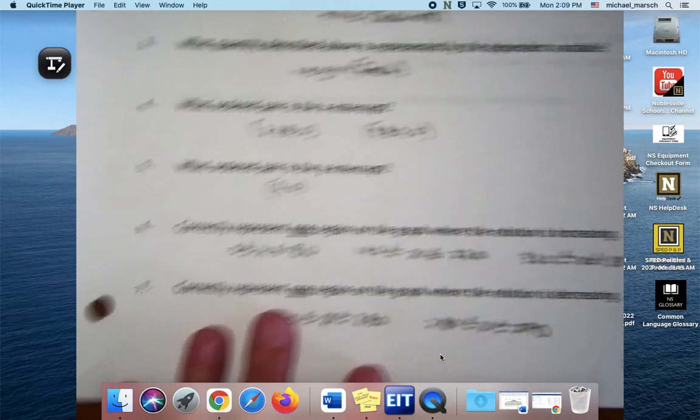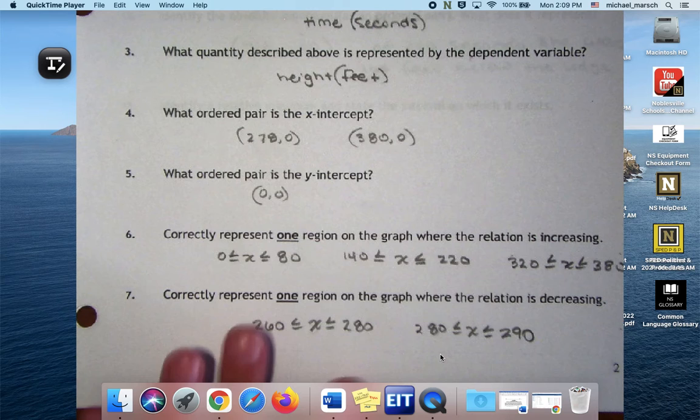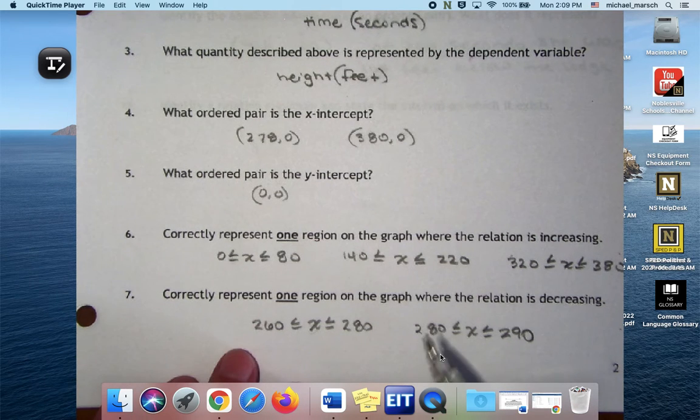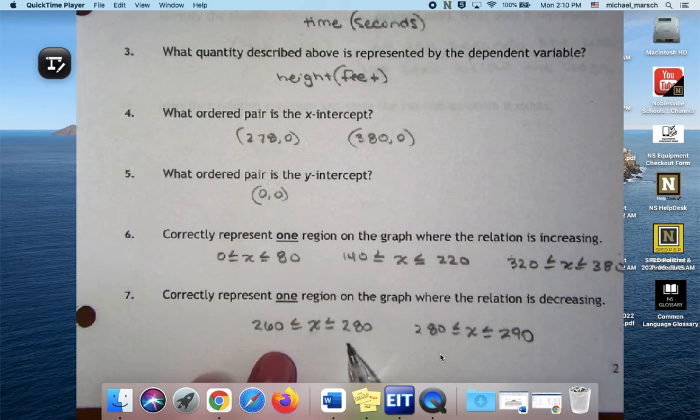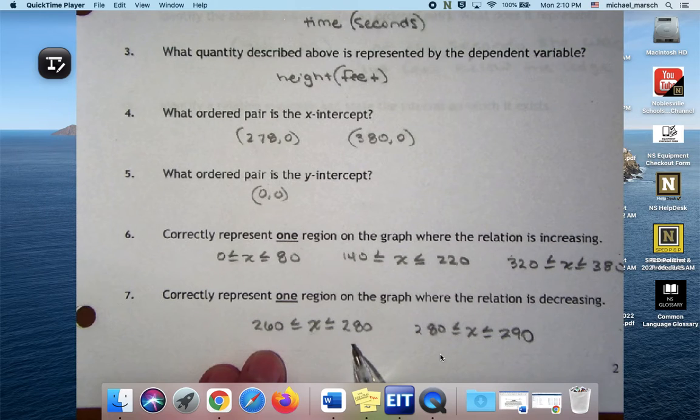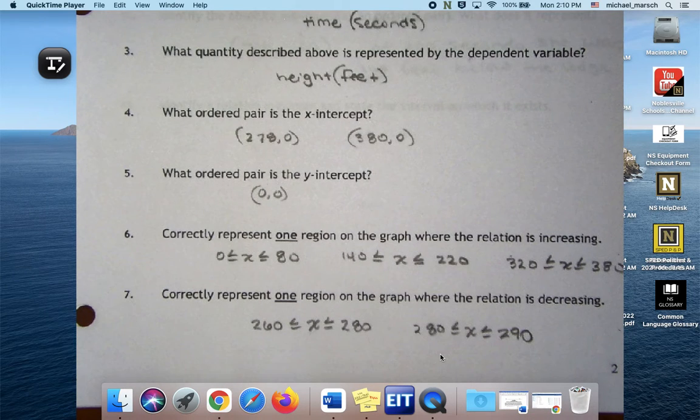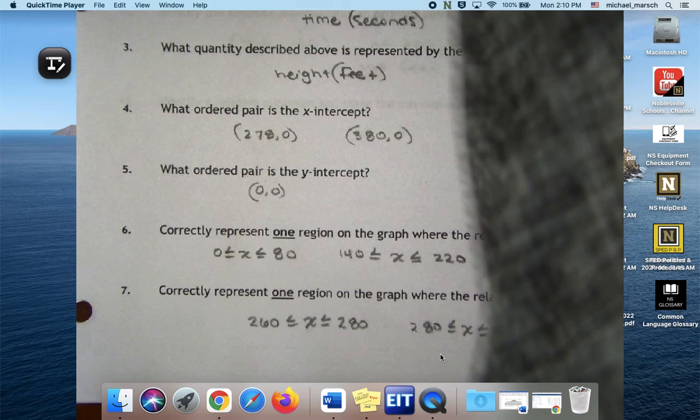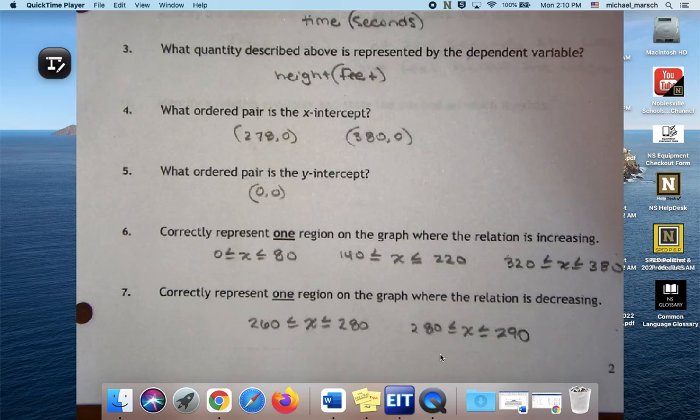Correctly represent one region where the relation is decreasing. So between seconds 260 and 280 it's quickly decreasing, or between 280 and 290 when she had to go back down to that third ski lift. I don't know how realistic this scenario is but we'll just pretend it's super normal.